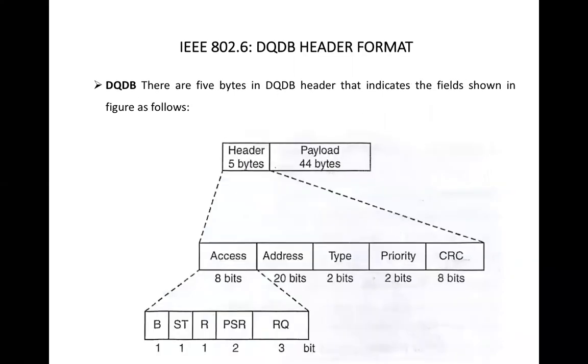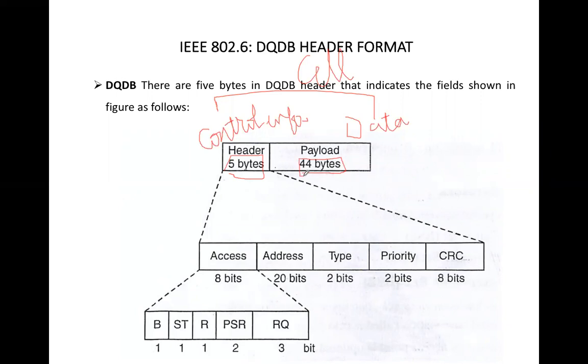Now let's discuss the header format. The header format contains two things: control information and data. The payload is also called the data. This is data and this is the control information. The combination of these two is called cell. In cell we have two things: header and payload, that is data. The header size is 5 bytes and the payload size is 44 bytes. So header is further divided into 5 different fields: access field of 8 bits, address field of 20 bits, type 2 bits, priority 2 bits and CRC 8 bits. The access field is further divided into 5 sub fields: V, VZ, ST, R, PSR and RQ. Now let's discuss these fields one by one.